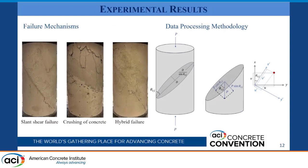To evaluate the significance of these five variables on cold joint capacity, we examine the governing failure mechanism and the interface shear resistance. We categorize failure mechanisms into three distinct modes based on the location and characteristics of fracture: slant shear failure, which is failure at the cold joint; crushing of concrete; and a hybrid failure combining both. Once we identify specimens that fail in slant shear, we calculate the interface shear resistance from the ultimate capacity.